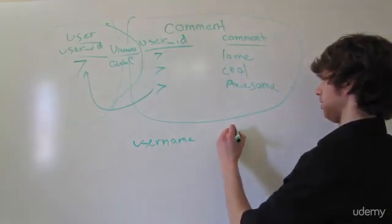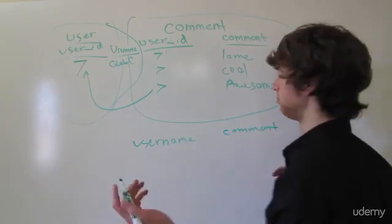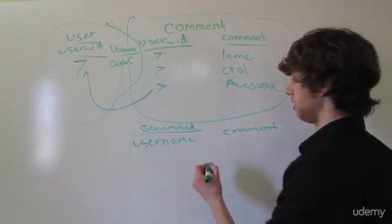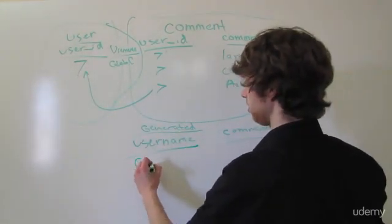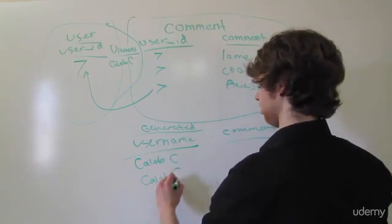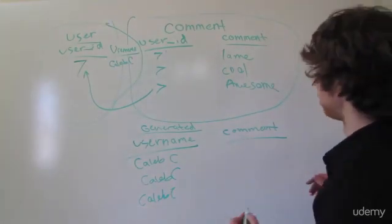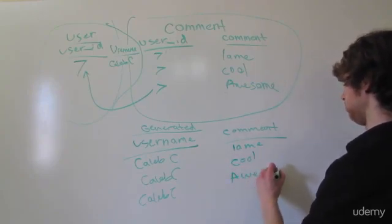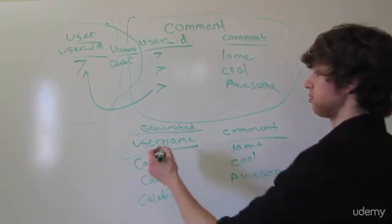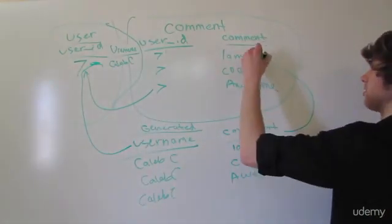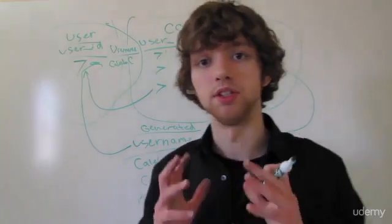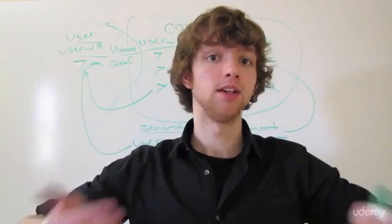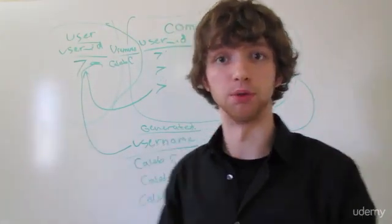Username. Comment. And the name of the table can be whatever you want. It can be generated table. Or it doesn't even need a name if you're just putting it on a website or something. And then under the username column it'll be Caleb C. And then Caleb C. And then Caleb C. And then under the comment you're going to have lame and cool and awesome. But this wasn't just like this to begin with. We got the username from this table and we got the comment from this table. So not only do you have to design the structure of the database but you have to structure the joins to basically put our database back into simple language or grandma readable tables.